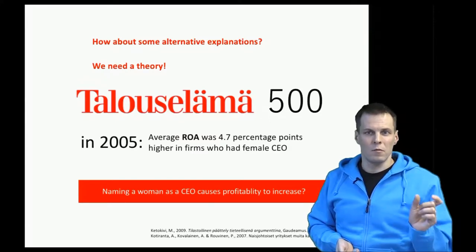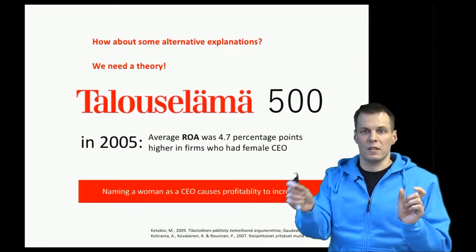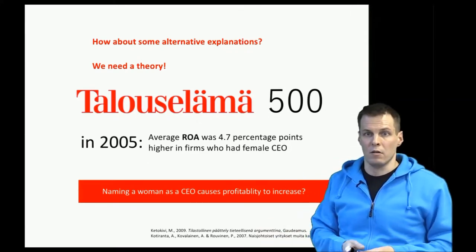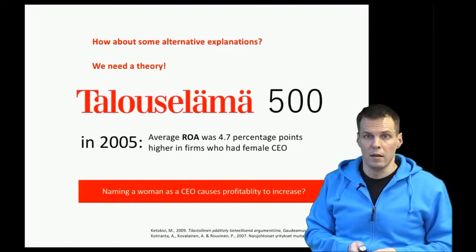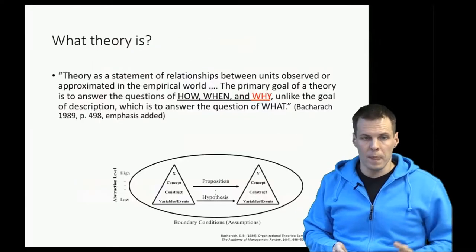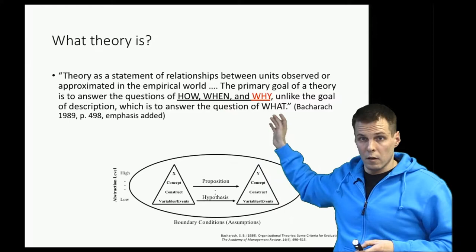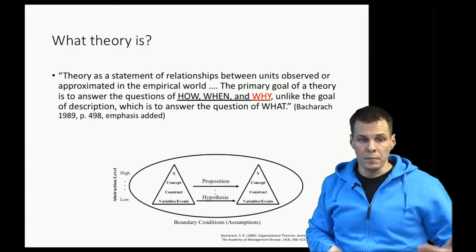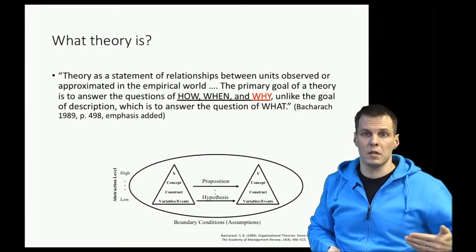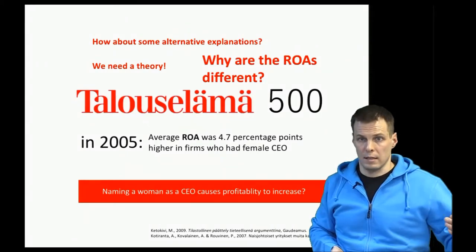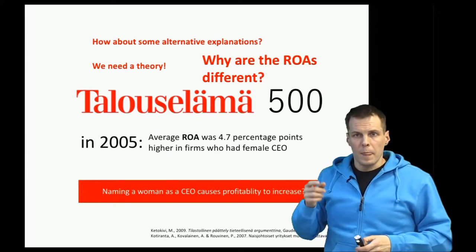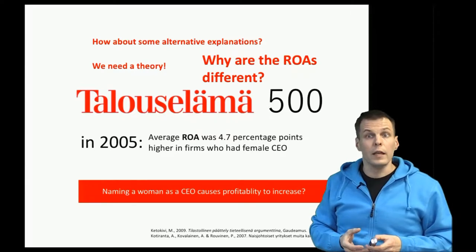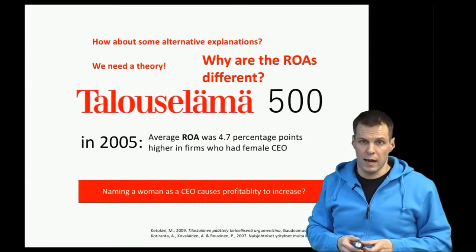Is the reason that women-led companies are more profitable because of the CEO's gender, or is there some other reason why certain companies tend to be led by women and also tend to be more profitable? To answer that, we need a theory — a set of connected propositions or claims that explain what happens, how, when, and why. The key question is why the return on assets differs between men and women-led companies. A big part of quantitative research is thinking about what rival or alternative explanations exist for your data.